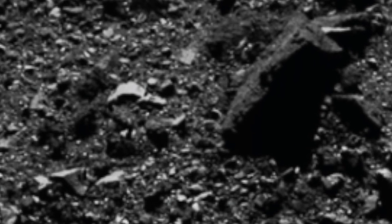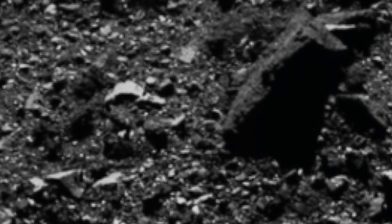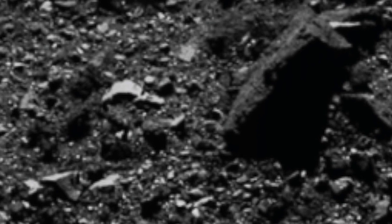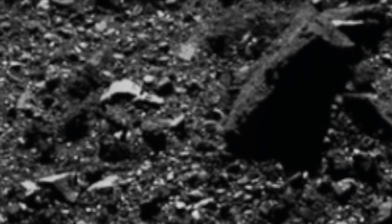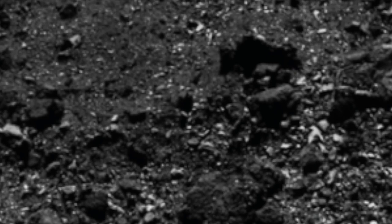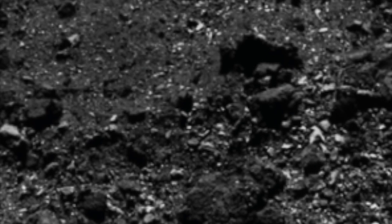Scientists have theorized that Bennu likely broke off from a much larger carbon-rich asteroid around 700 million to 2 billion years ago. Its original formation was likely in the main asteroid belt between Mars and Jupiter.